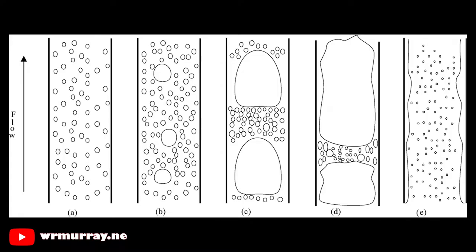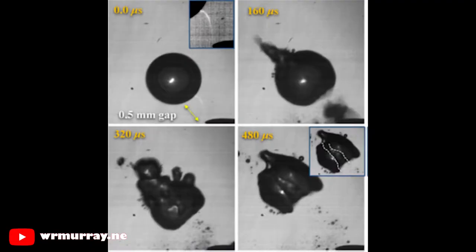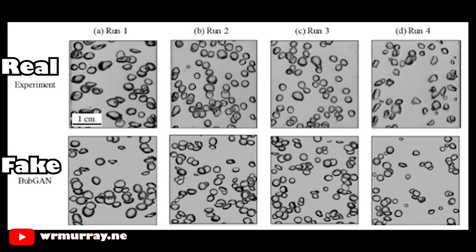Engineers love bubbles. Mechanical engineers heat the bubbles. Plasma engineers zap the bubbles. Computer scientists simulate the bubbles. Nuclear engineers moderate the bubbles. Data scientists create fake bubbles with generative adversarial neural networks.